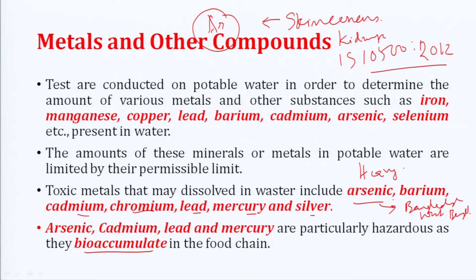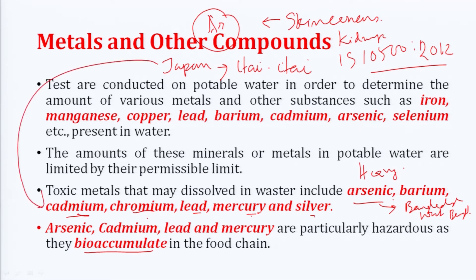Cadmium, chromium, mercury, silver — all of these will cause very major problems. There is a disease called Itai-itai disease, which was seen in Japan. This was caused due to high amounts of cadmium in their water source. All these metals, even though they may not be present everywhere — only at small, localized locations — if they are present, those populations will be extremely affected.